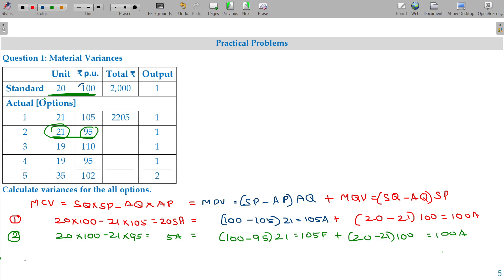Third option, we will go for the third option. So standard cost is the same, 20 into 100. Actual cost 19 into 110. Quantity cheaper price, 19 into 110. The value being 2090. Approximately 90 rupees excess are spent, adverse.